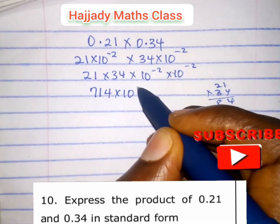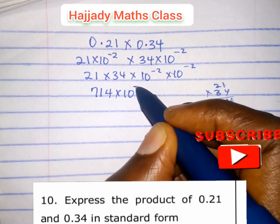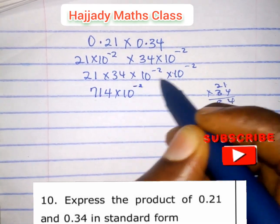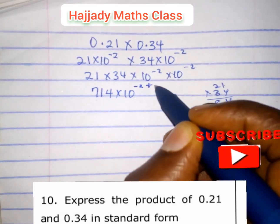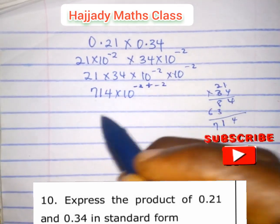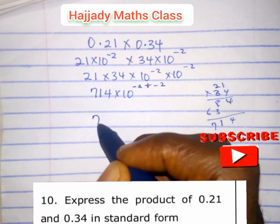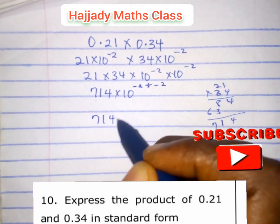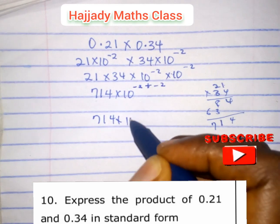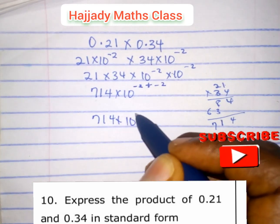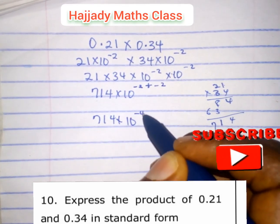The law of indices comes in here: minus 2 plus minus 2 gives minus 4. So here we have 714 times 10 raised to the power minus 4.